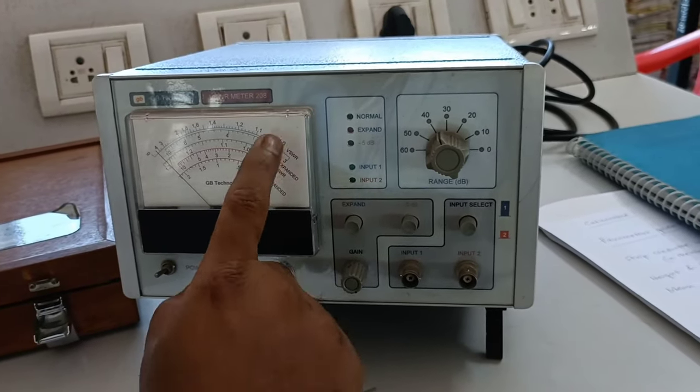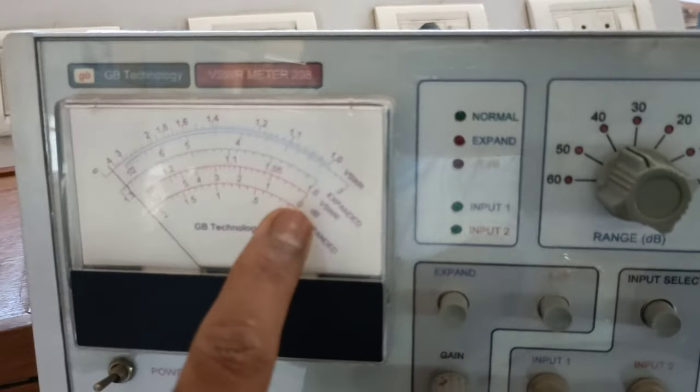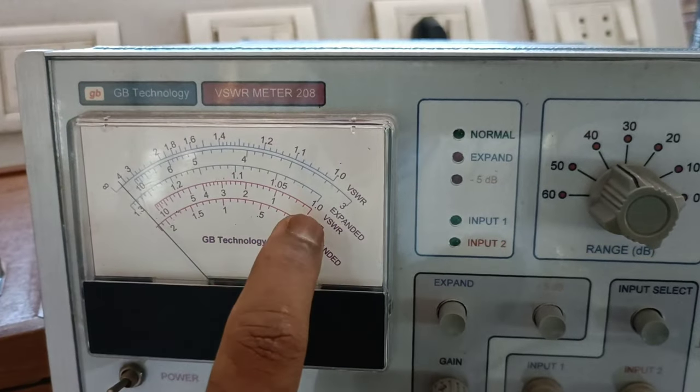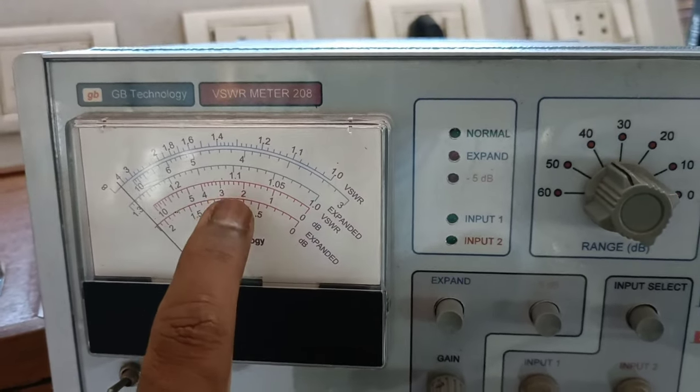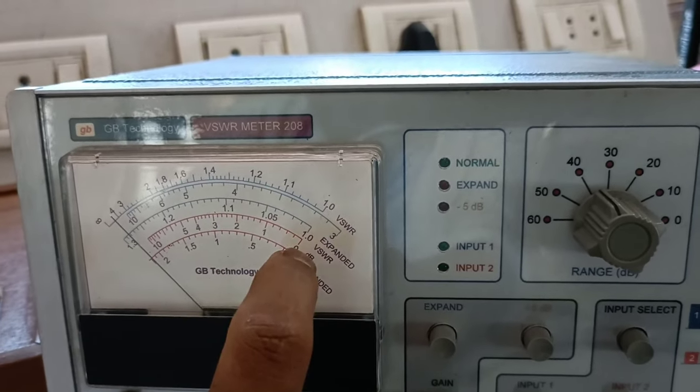So coaxial detector in conjunction with this meter, VSWR meter, we can measure the microwave power in decibels. Here you can observe, there are so many scales are there. But what is our constant scale is last but one. That is 0 to 10 dB. You can observe here. Last but one. 0 to 10 dB. 0, 1, 2, 3, up to 10. This is the scale, important scale to take the readings.